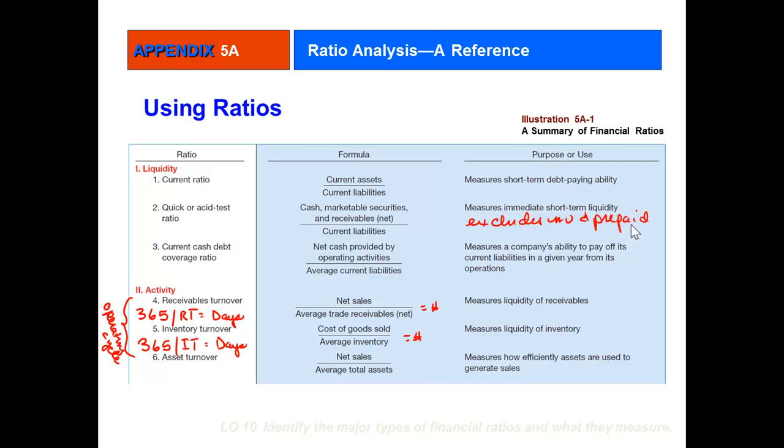For many analysts, that doesn't say a whole lot, and they like to divide it into 365 to get days sales or days receivables. You'll see over here that if I do 365 divided by the receivable turnover, you get the number of days from the time of sale until the customer pays. That's giving you the lifespan of a receivable, which to many people is more meaningful.